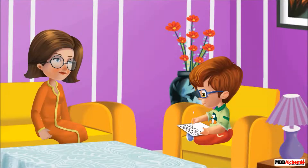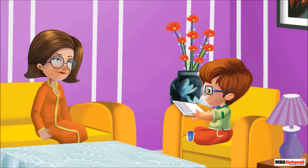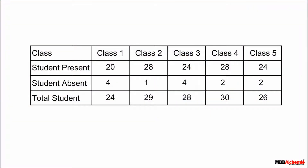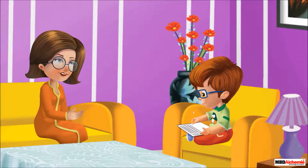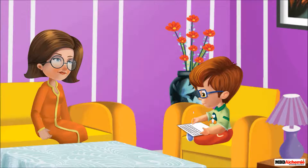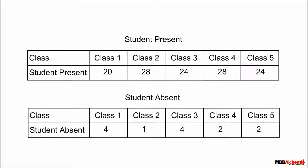Neil shows this data to his mother. She asks Neil to create two separate tables — one for students present today in all five classes, and the other for absent students in all five classes. He draws a table in his notebook.